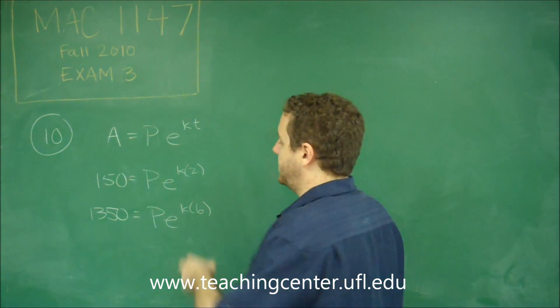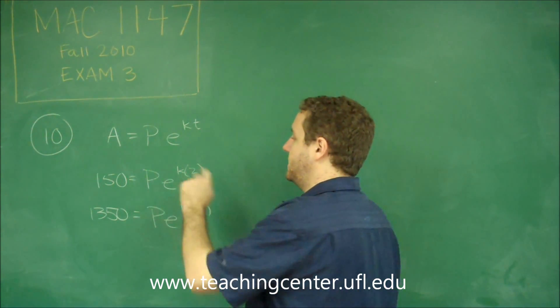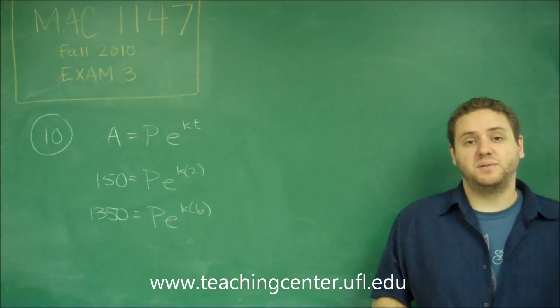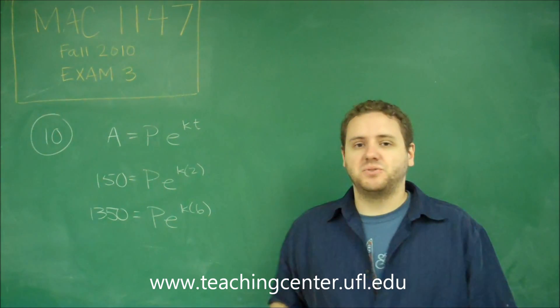So our objective here is to figure out how many there were initially. Well, you can see here we have 2 equations and we have 2 variables, P and K. Those are what we don't know. So we can definitely solve this.